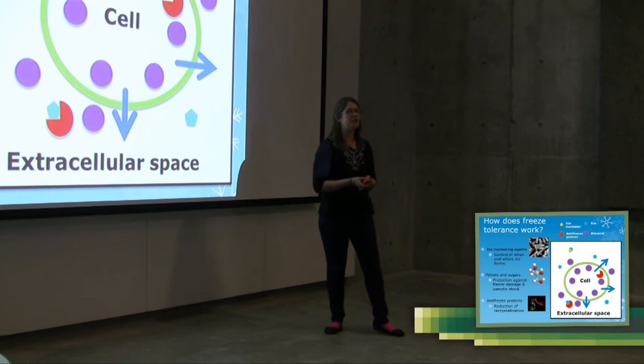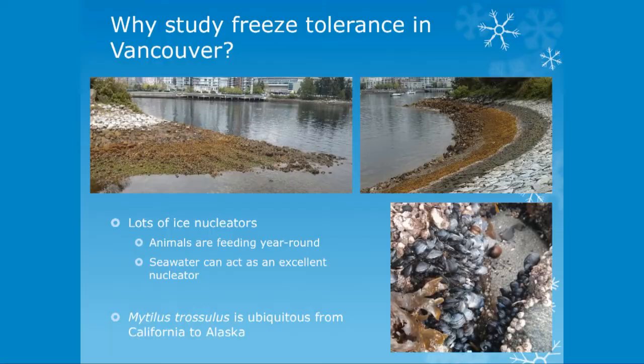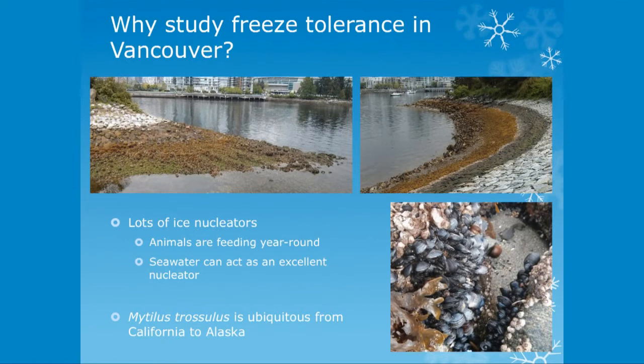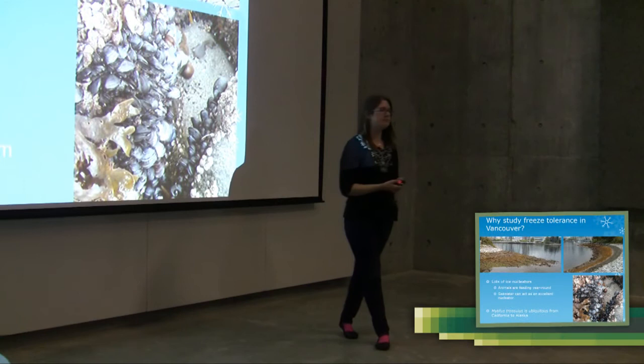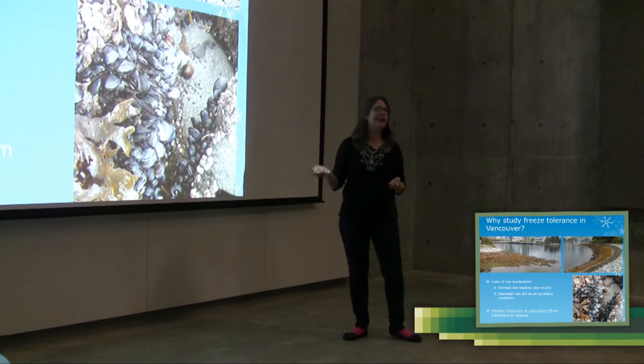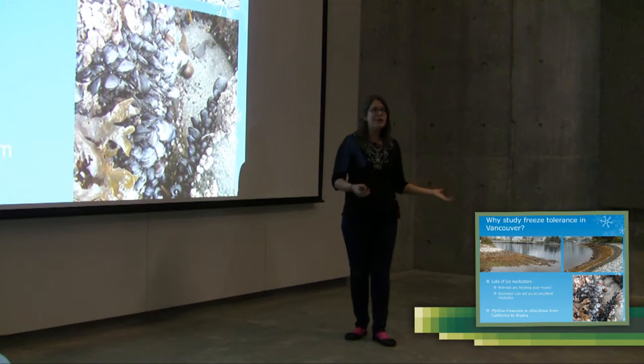Now the last topic I wanted to talk about is why study freeze tolerance in Vancouver. Canada makes sense. Canada gets really cold, the animals often survive freezing. In Vancouver we're in one of the warmest spots in Canada. I think Victoria is a little bit warmer. Why study freeze tolerance here? Well there's lots and lots of animals that live in what we call the intertidal zone. So that's the zone between the high tide line and the low tide line. And the intertidal zone remains mostly ice free through the winter, although you can get some ice, but the animals in the intertidal are actually feeding year round so they're always going to have potential ice nucleators within their gut. They have these nucleators around, they're going to have ice formation and if they're not freeze-tolerant they're not going to survive.